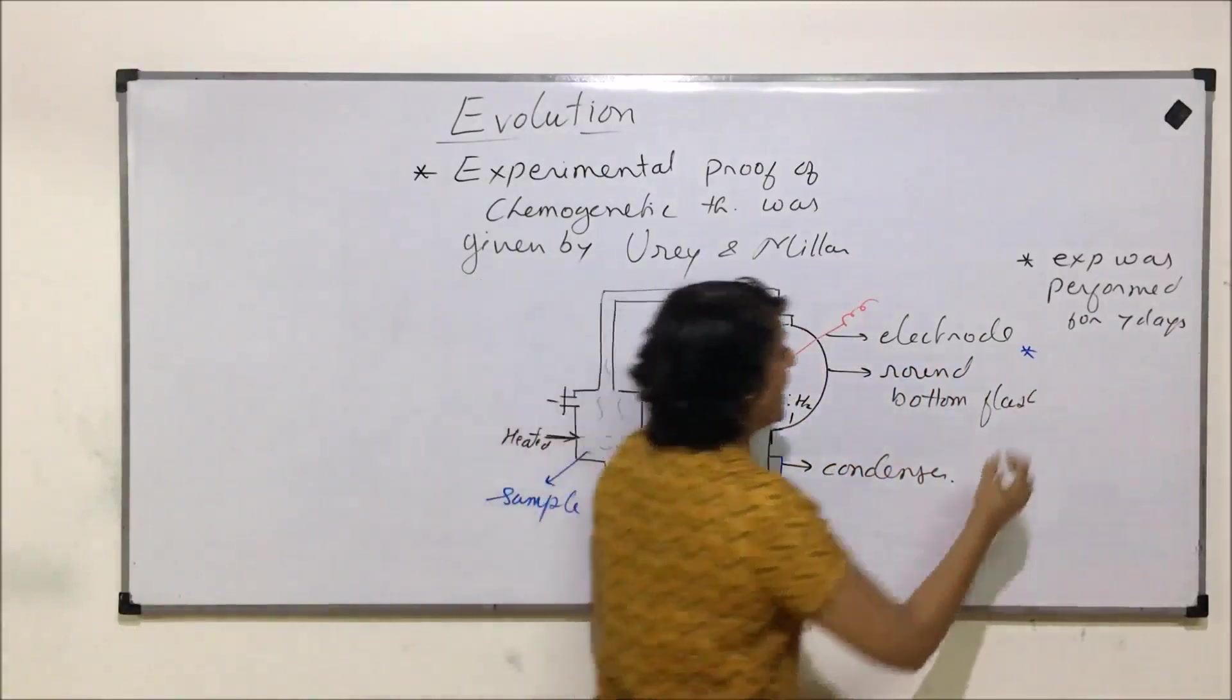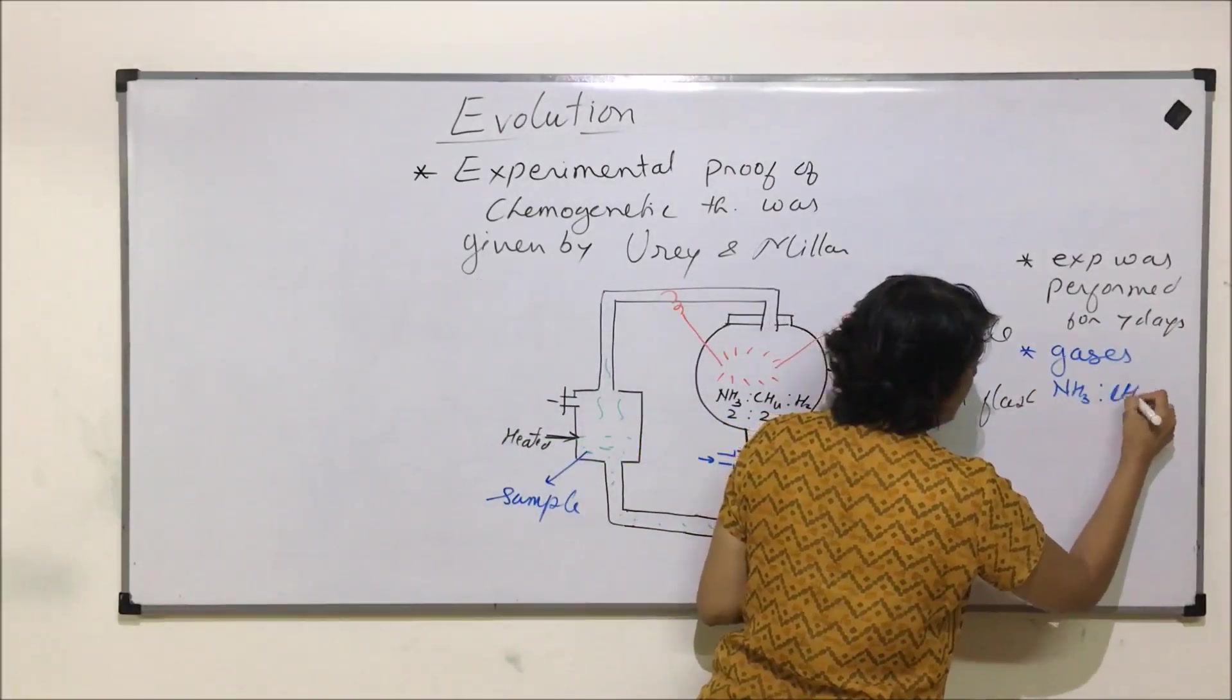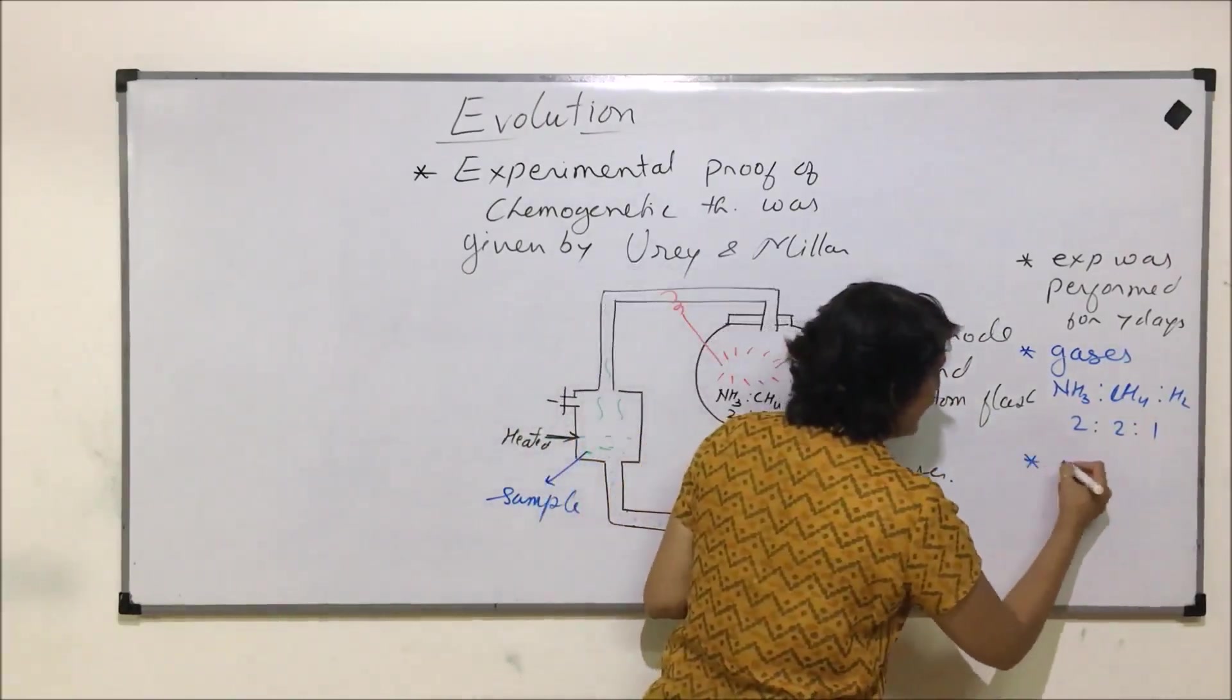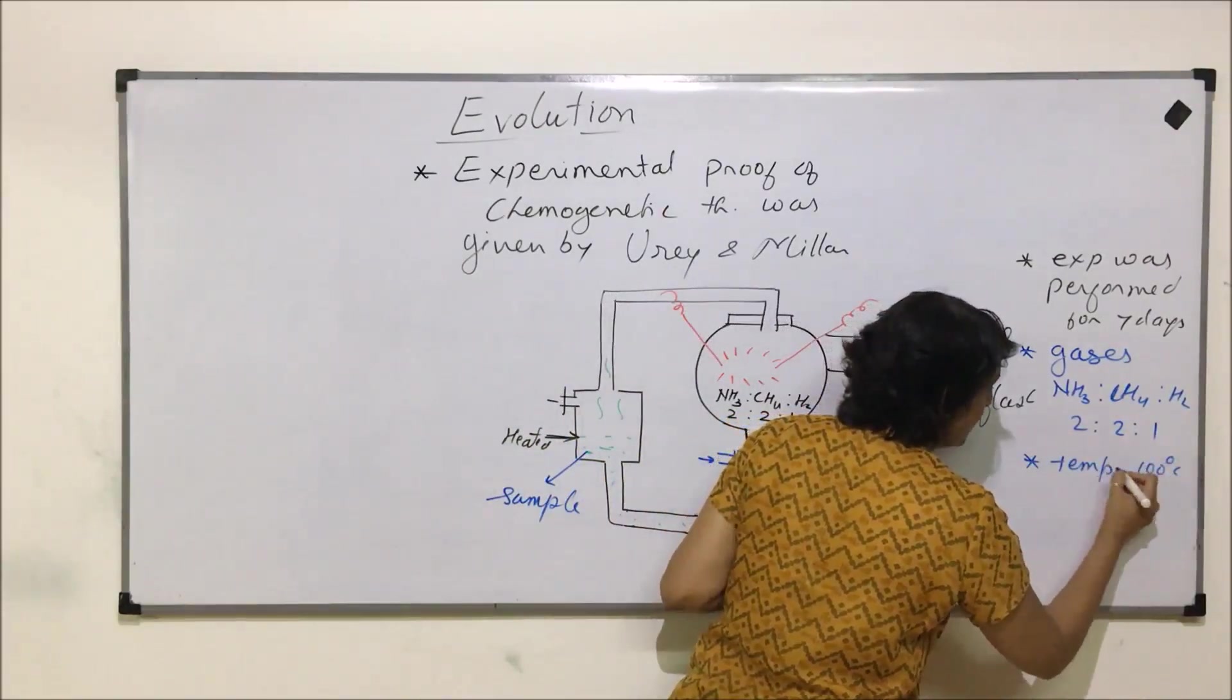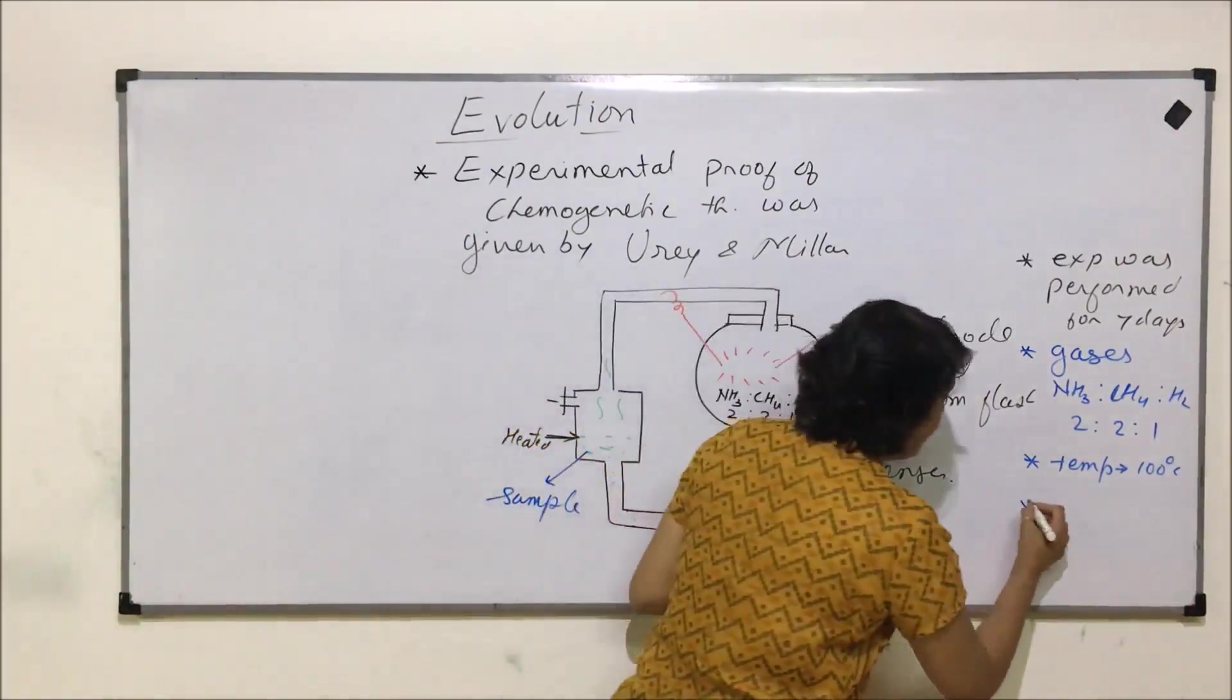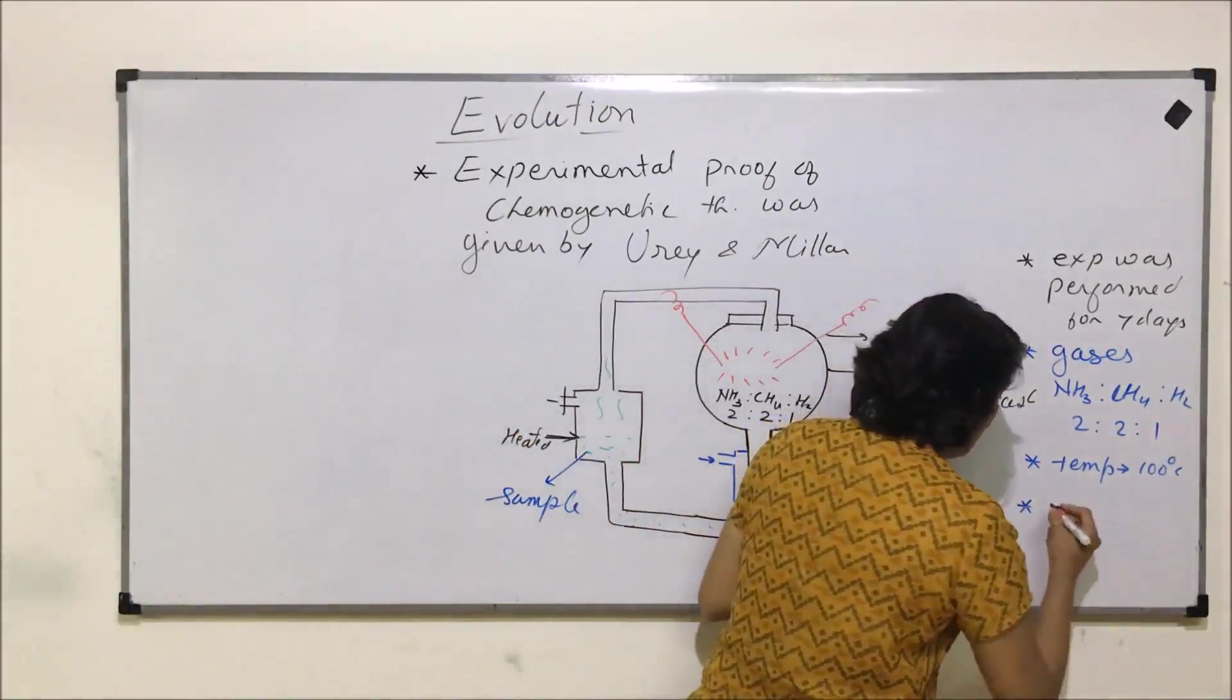The gases which were taken were ammonia, methane, and hydrogen in the ratio of 2:2:1. The temperature was maintained around 100 degrees Celsius and it was continuously heated. When they analyzed this sample, they found certain molecules.